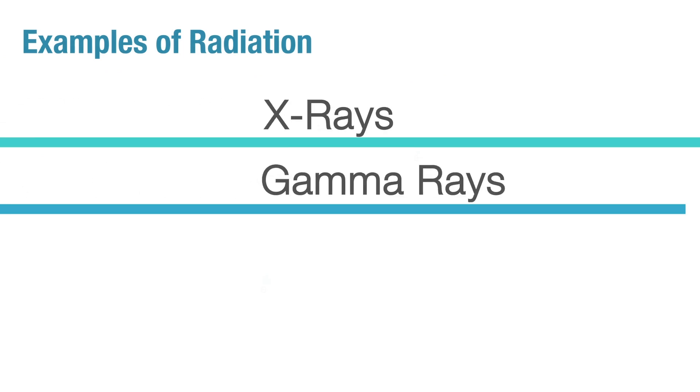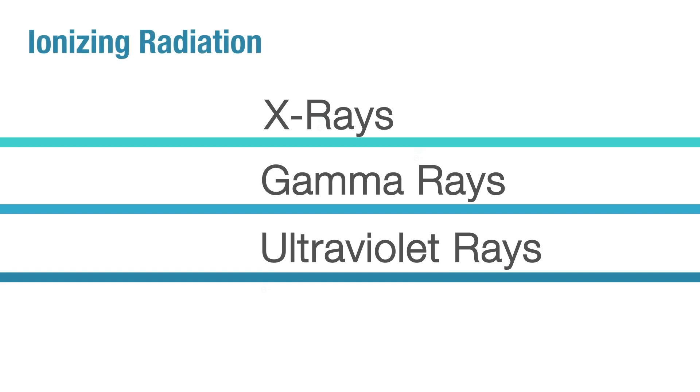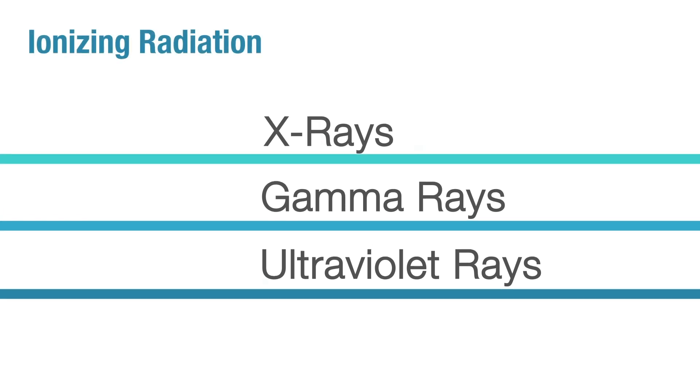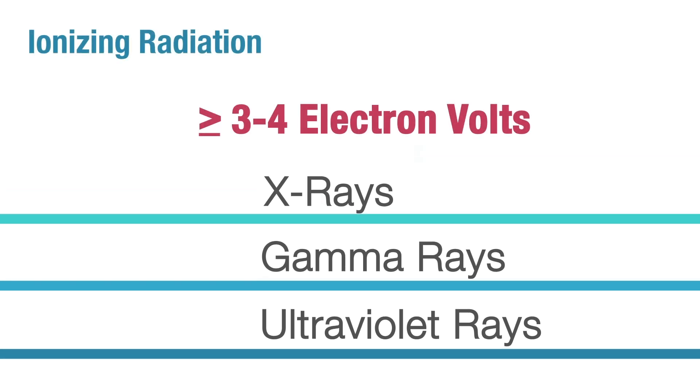However, high energy bits of light, like x-rays, gamma rays, even ultraviolet rays, are considered ionizing because they have enough energy, around 3 or 4 electron volts, enough to remove an electron, whereas lower energy light does not.